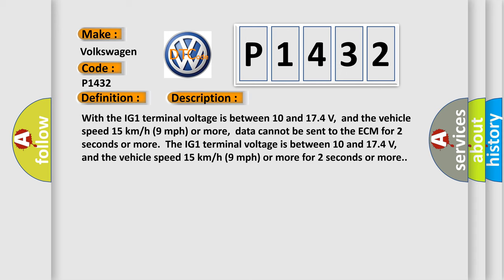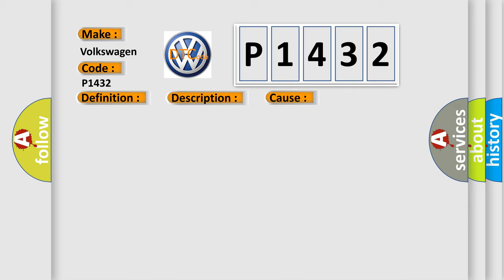With the IG-1 terminal voltage between 10 and 174 volts, and the vehicle speed 15 kilometers per hour or 9 miles per hour or more, data cannot be sent to the ECM for 2 seconds or more. The IG-1 terminal voltage is between 10 and 174 volts, and the vehicle speed 15 kilometers per hour or 9 miles per hour or more for 2 seconds or more. This diagnostic error occurs most often in these cases.